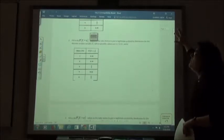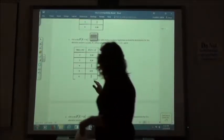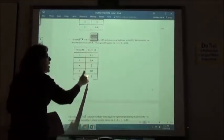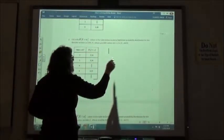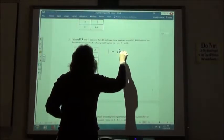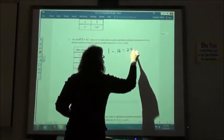So number two, same kind of thing. They just want you to realize that all five of these numbers here have to add up to 1. So we're going to first start off by taking 1 and subtracting off the ones we know. 0.16, 0.24, and 0.22.